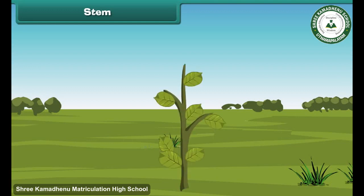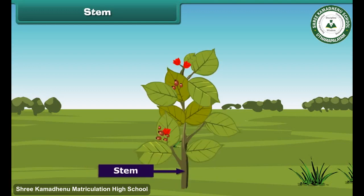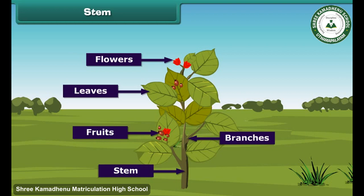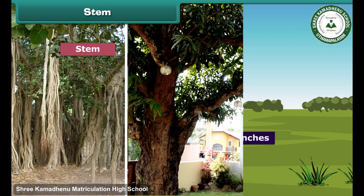Now let's know about stem. Stem is the green or brownish part of the plant which grows above the ground. It provides support to the plant and bears branches, leaves, and fruits on its body. In young plants, the colour of the stem is usually green, but over a period of time and with advancing age, it turns brown. Some trees, like banyan and mango, have a hard, strong and brown stem called a trunk.